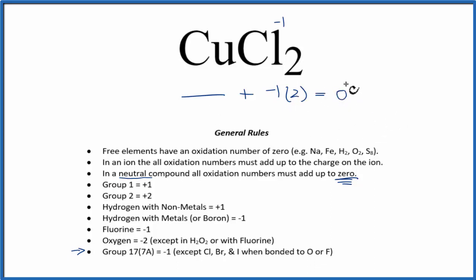So in order for this to be true, we need to have a plus 2 for the copper. Plus 2, minus 2, that gives us zero. So the oxidation number for the copper in CuCl2 is plus 2.